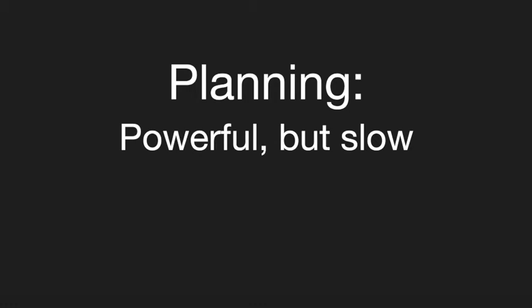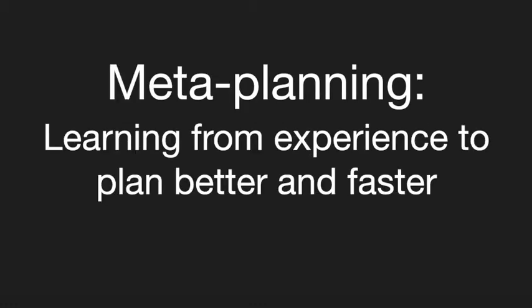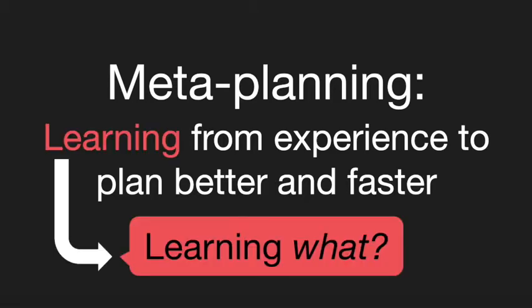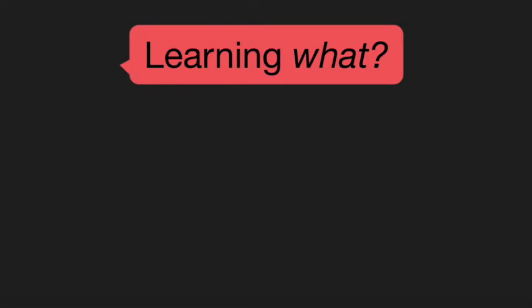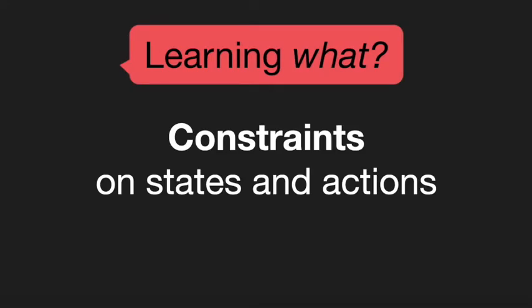Planning for robotics is powerful but slow. We are interested in meta-planning, learning to plan better and faster from previous experience. But what exactly should be learned? We propose that the agent should learn to impose constraints on itself to cut down the space of possible plans.